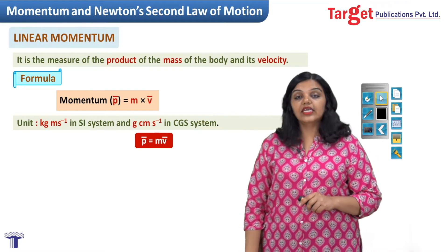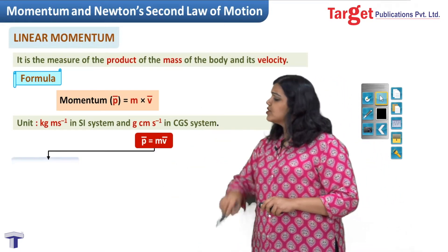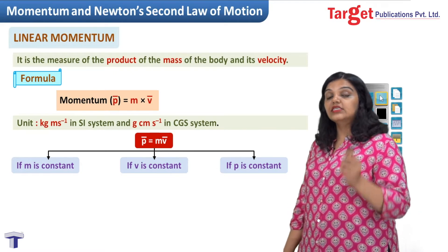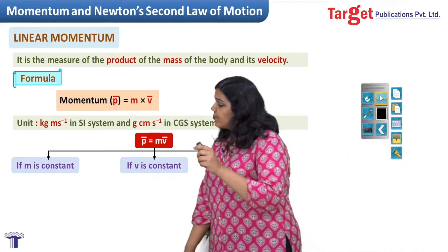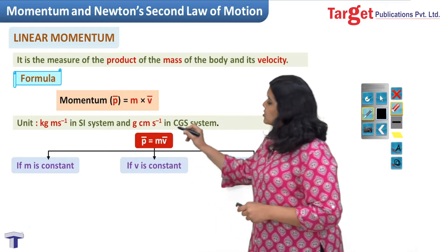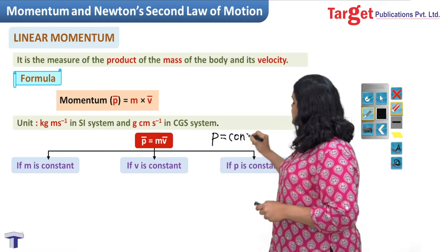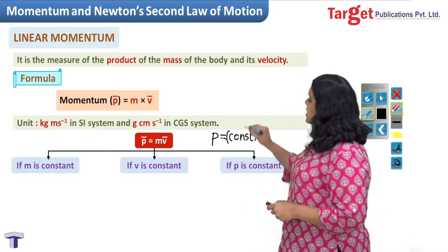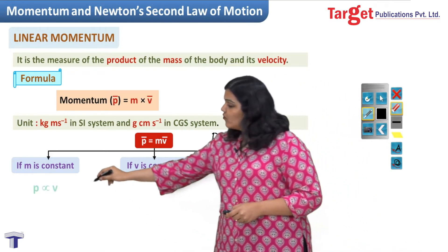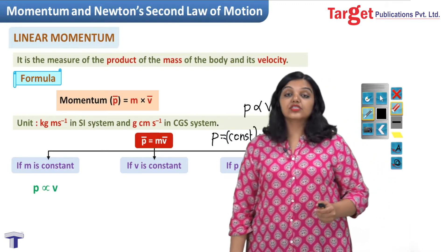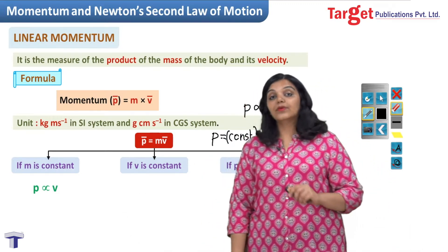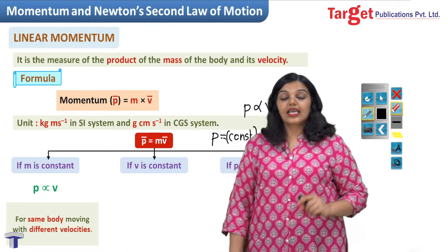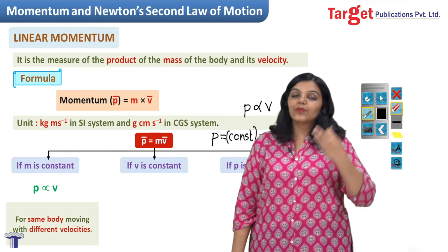Looking at the formula p = mv, we can examine three different cases. Case 1: suppose mass is constant. If m is constant, then p = (constant) × v, meaning p and v are directly proportional. This applies to situations where the same body moves with different velocities — the greater the velocity, the greater the momentum.